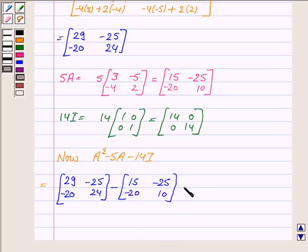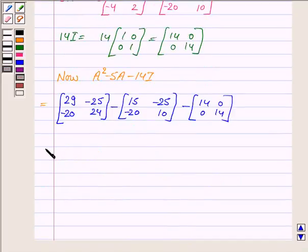Minus 14I which is [14, 0; 0, 14], which is equal to 29 minus 15 is 14, minus 25 plus 25 is 0, minus 20 plus 20 is 0, 24 minus 10 is 14.